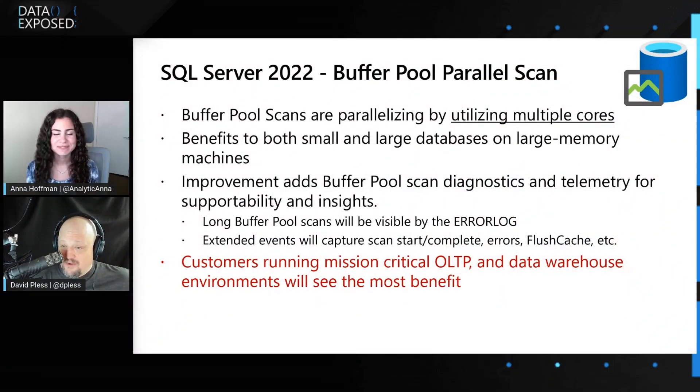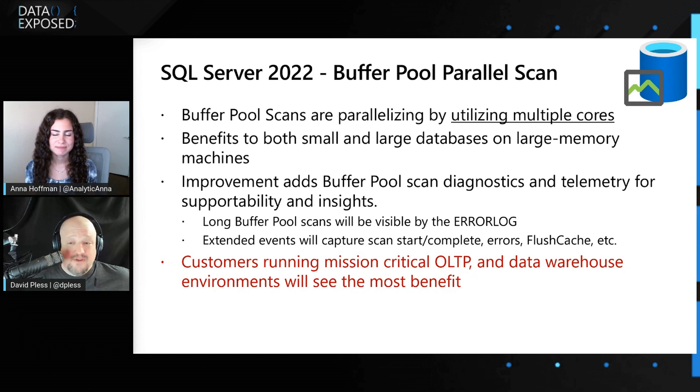So I'm hoping you're coming on to tell us something new and exciting in 2022 — that you're going to fix this. So in SQL Server 2022, the Buffer Pool Parallel Scan feature improves the performance of these scan operations on larger machines by utilizing multiple CPU cores. Customers running SQL Server 2022 may see over 20 times improvement in executions that were previously slower due to the serialized scan operations.